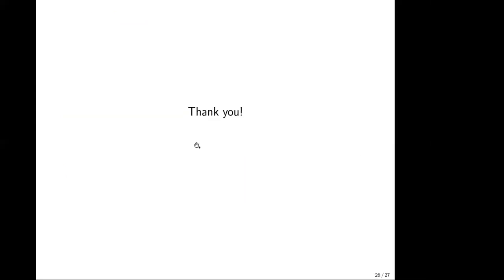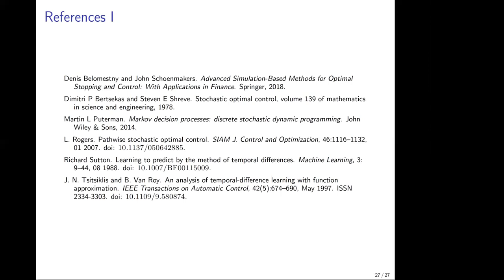Спасибо. Здесь некоторые ссылки по сегодняшнему докладу. Вопрос: если в value-функции взять не дисконтирующий множитель, а параметр T и не воспринимать награды на первых T шагах — можно и так, но это другая задача. Это отдельное направление с этой value-функцией.